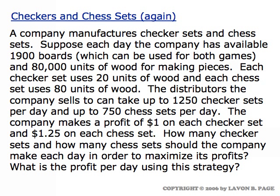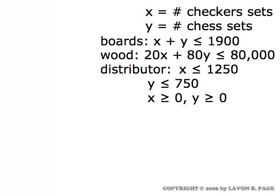Now let's return to the checkers and chess sets problem — the manufacturer making the two games. The problem is described the same as when we looked at it in terms of a graphical solution back in Part 2 of the class. We let X and Y represent respectively the number of checker sets made and the number of chess sets made, with constraints from limited boards, limited wood, and distributor limits of 1,250 checker sets and 750 chess sets.